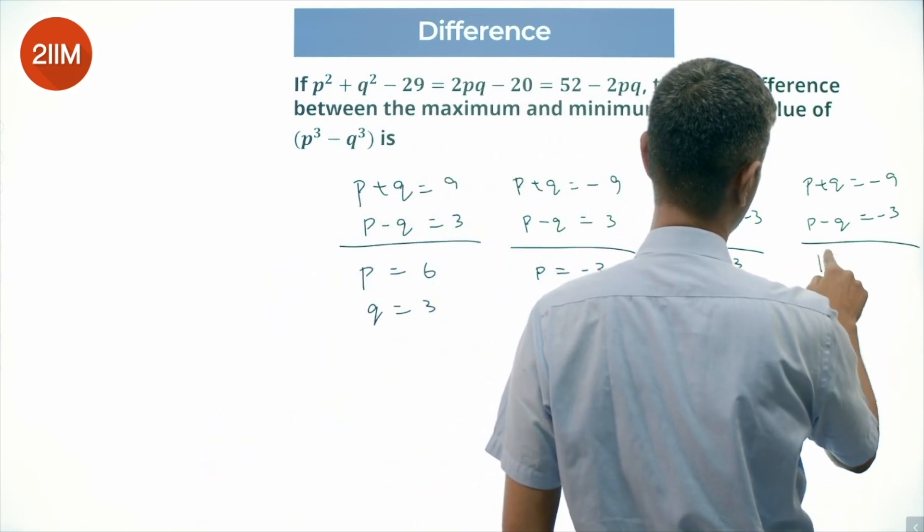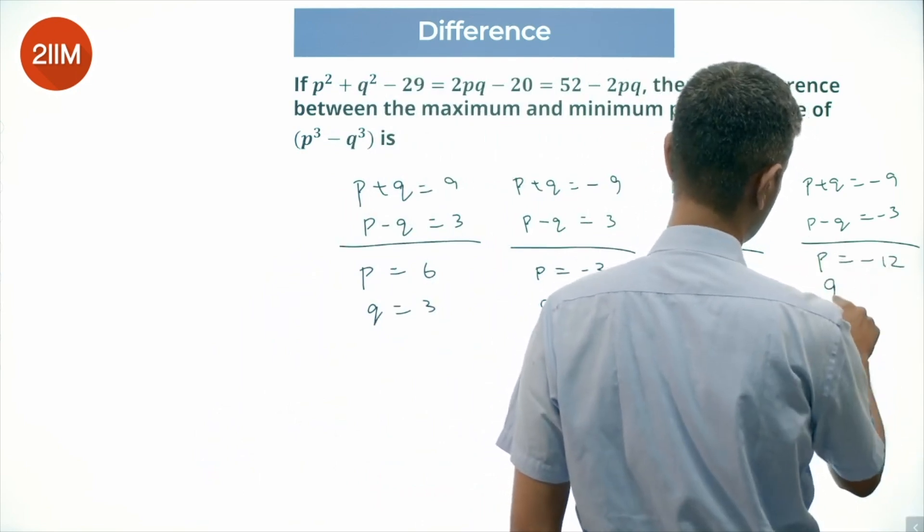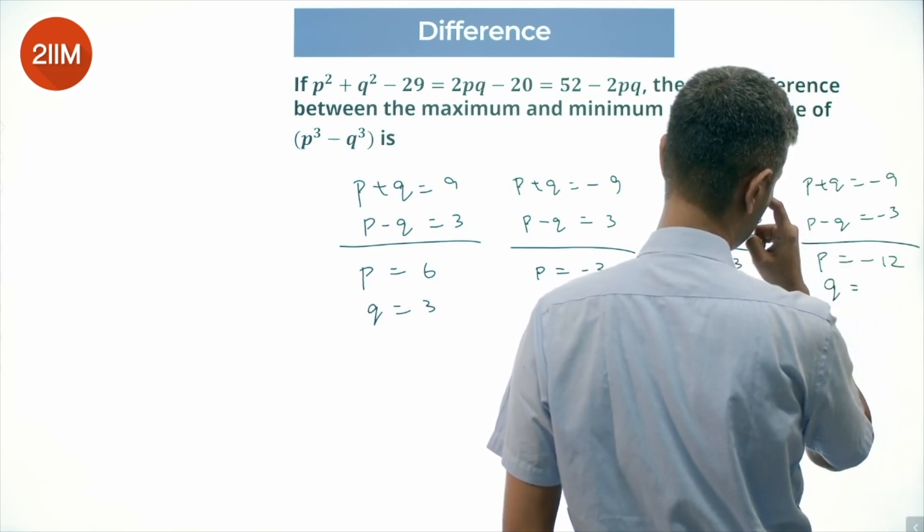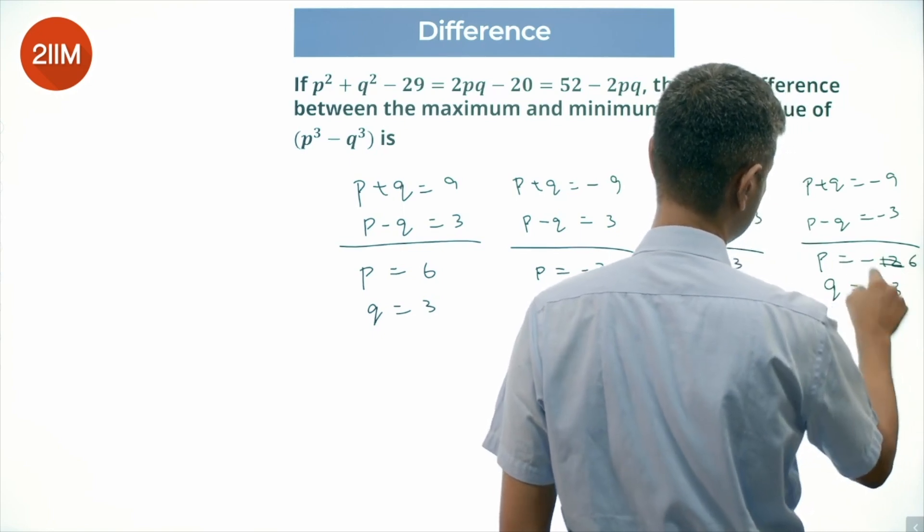2P is minus 12, P is minus 6, Q is minus 3.